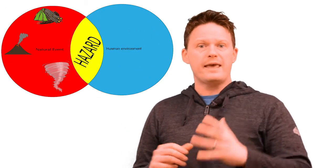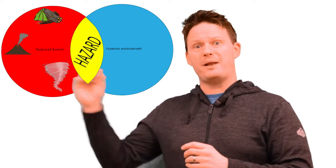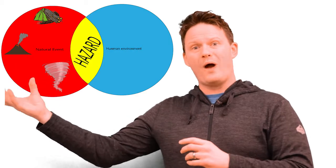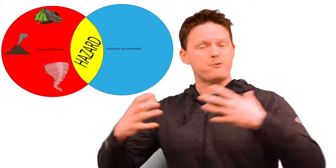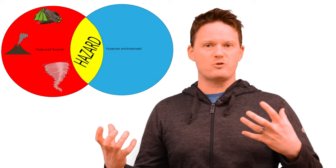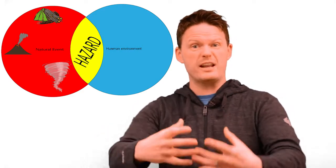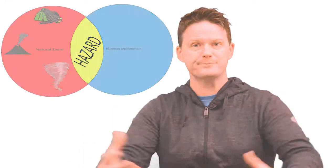Remember those Venn diagrams we looked at in the first lesson? If we're living in a place with no hazards, then our hazard risk is relatively low. If we're living in a place with lots of natural hazards, then our hazard risk is relatively high. So what factors could increase hazard risk, on top of the fact that where you live can increase your hazard risk?